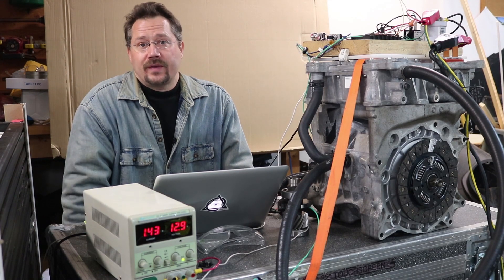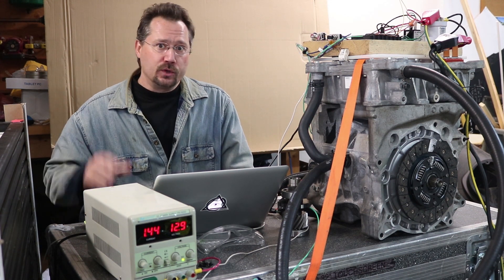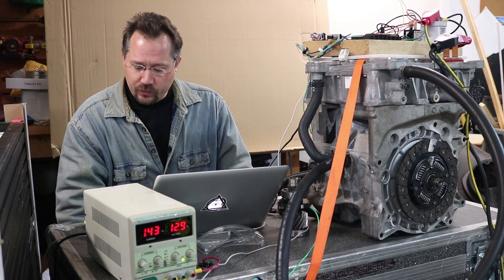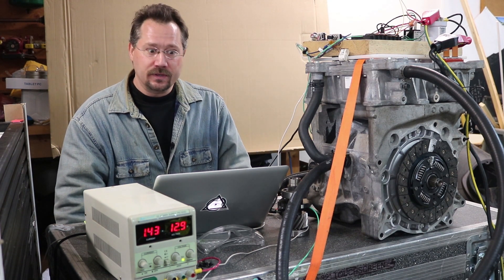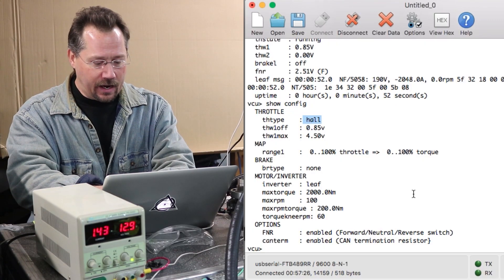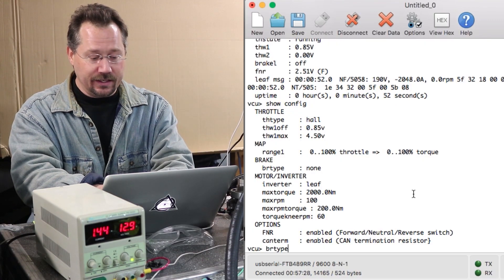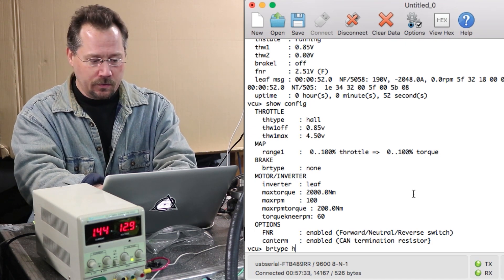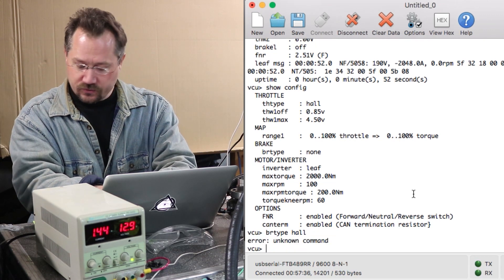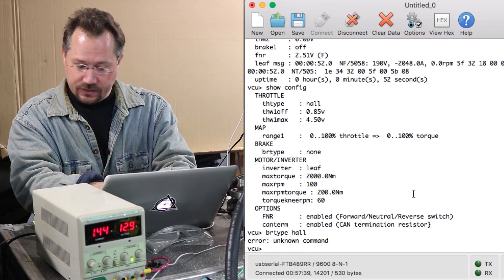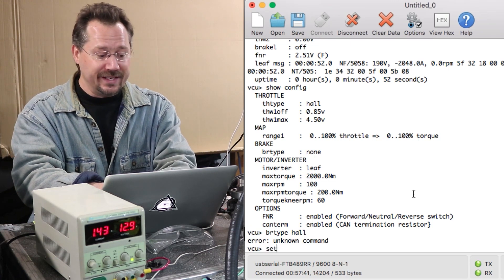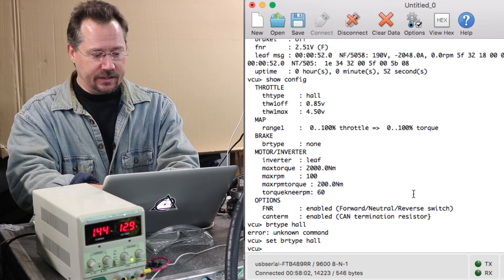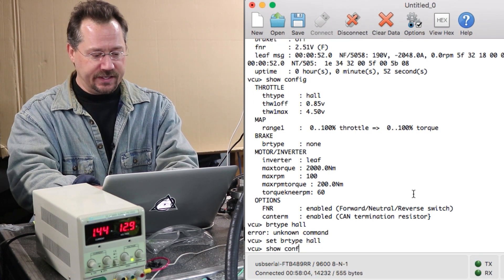Now when it comes to actually the regenerative braking there's three different possible modes we can use here and those are set with the brake type command. So that is literally br type, brake type, and we will set this to hall. Excuse me, set brake type hall and let's just do a show config again.